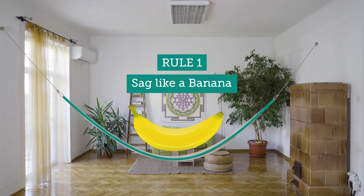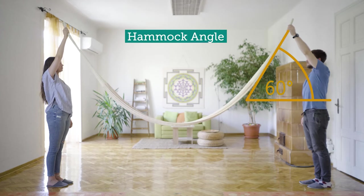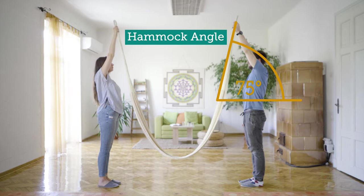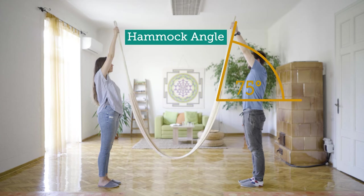In other words, the hammock should sag loosely. How far the hammock sags is determined by the so-called hammock angle. In the picture, we see how the angle is measured. The larger the angle, the more the hammock sags.